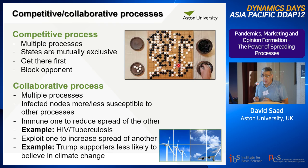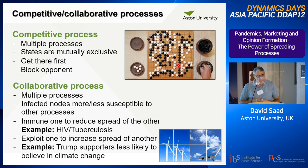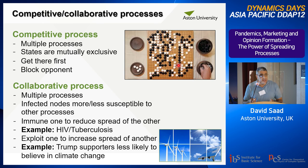Now I move to the next part of my talk: collaborative and cooperative processes. In competitive processes, you have multiple processes where states are mutually exclusive — you want to get there first to block your opponent, like surrounding your opponent in Go. In collaborative processes, multiple processes support one another, like the example of HIV and tuberculosis mentioned by Yamir Moreno on Monday. You increase the spread of a disease if you are already infected by one. Alternatively, you might expect that Trump supporters are less likely to believe in climate change — so this also applies to how information spreads collaboratively.